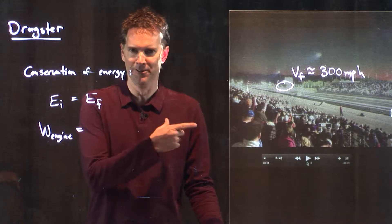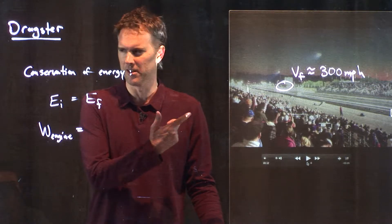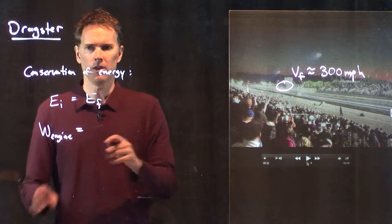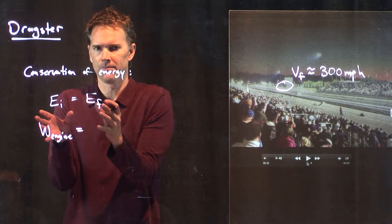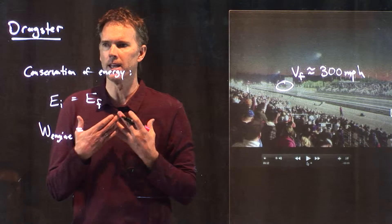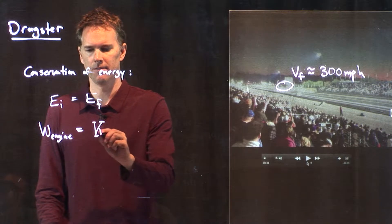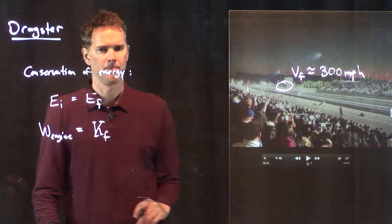I'm not making these numbers up. These are real numbers. 300 miles per hour, which is kind of weird to think about. So, at the end of the track, the engine has done all its work. The energy has all gone into kinetic energy of the race car.